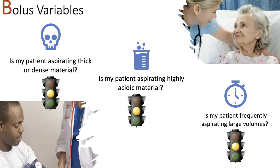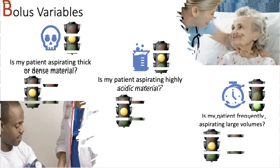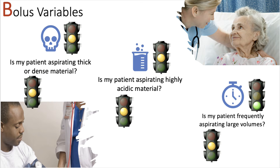First, let's look at bolus variables. For our first patient, is he aspirating thick or dense material? Well, right now he's NPO, but we did have liquids aspirated on the video fluoroscopy. The same concept applies for highly acidic material — he's NPO, but we can modify that and stay away from highly acidic materials. He is not aspirating large volumes at the moment. Our elderly lady, on the other hand, is aspirating all liquids regardless of density and acidity, though she's only aspirating trace amounts.